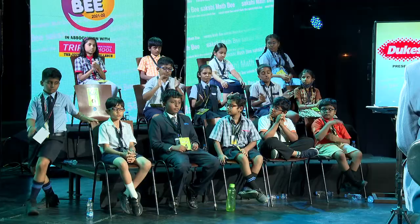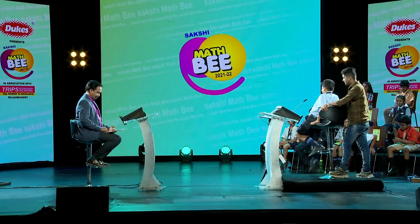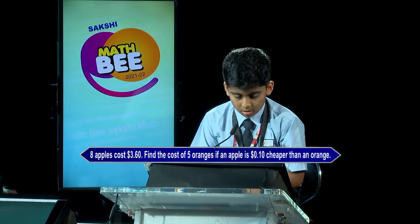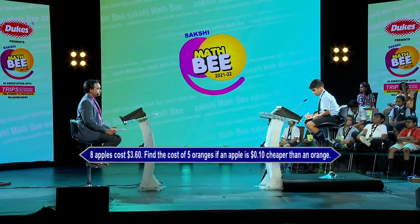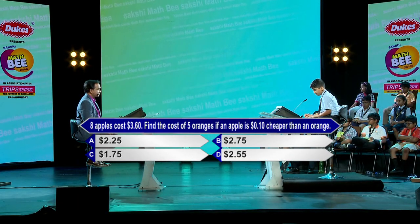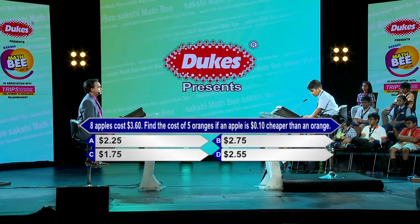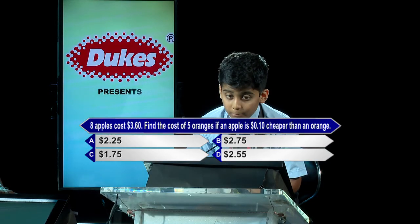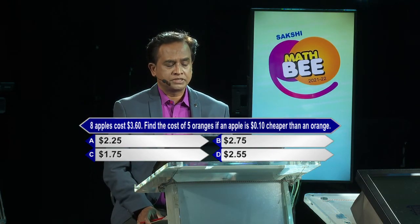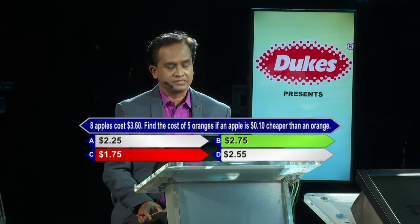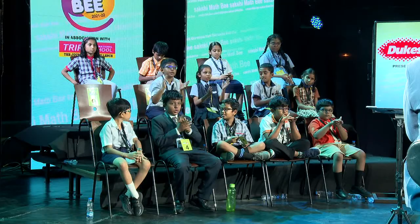I'd like to call upon the next contestant, Daivik G from Kennedy High, the Global School, Hyderabad. Eight apples cost $3.60. Find the cost of five oranges if an apple is $0.10 cheaper than an orange. Options: A-$2.25, B-$2.75, C-$1.75, D-$2.55. Ten seconds more. Contestant answers option C, $1.75. Kindly lock option C. I'm sorry, option C is incorrect. Option B is the correct answer. Really sorry, and many congratulations for coming to this level.